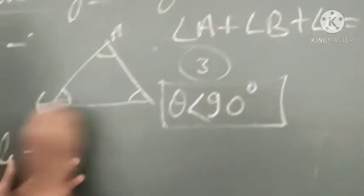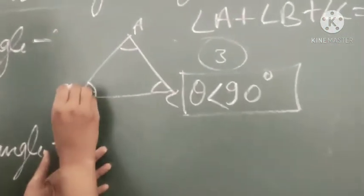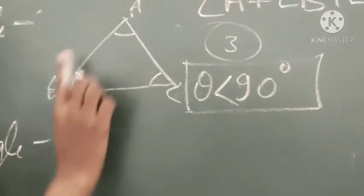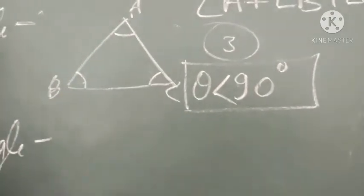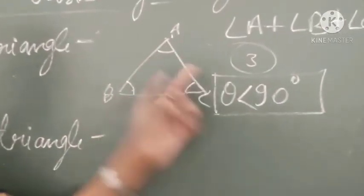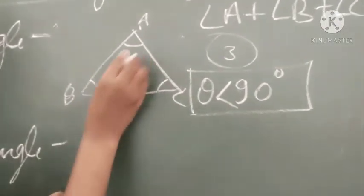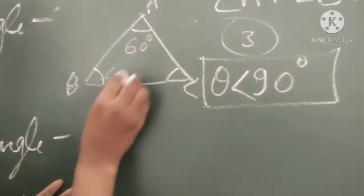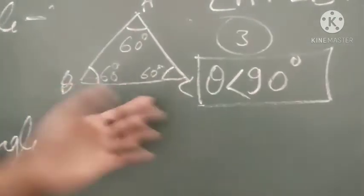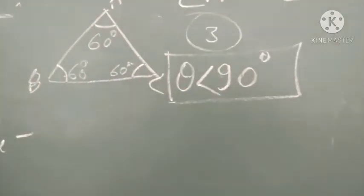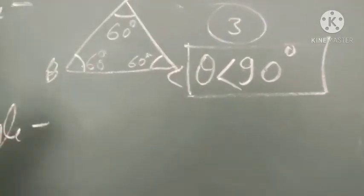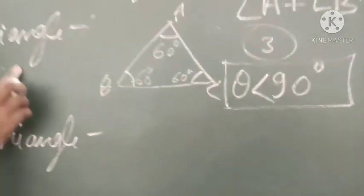Suppose the 3 angles are A, B, and C. Their summation must be 180 degrees. In an acute triangle, all 3 angles are less than 90 degrees. For example, suppose 60 degrees, 60 degrees, and 60 degrees — all 3 angles are less than 90 degrees, and their summation is 180 degrees. So this is the acute triangle.